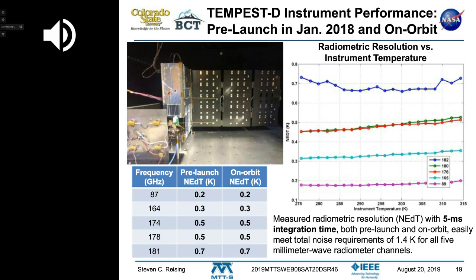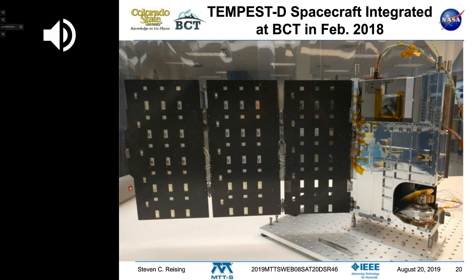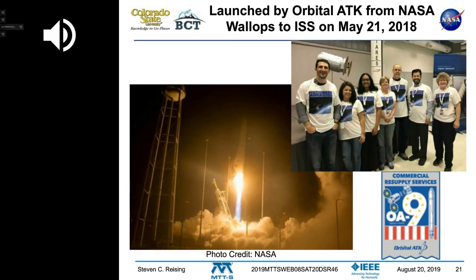Here's the 6U CubeSat integrated in February 2018, showing the scanning motor and reflector at the lower right, Blue Canyon Technologies avionics at the top right, and the back of the solar panels on the left. The big day was May 21st of last year, with a lot of the team from CSU and JPL — including NASA Headquarters — enjoying the early morning launch of Commercial Resupply Services 9 by Orbital ATK.